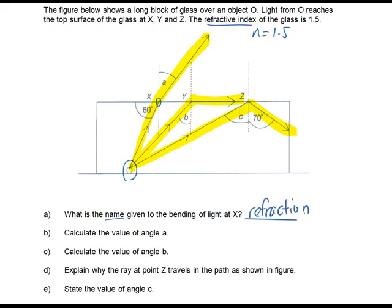They are basically asking for the process. As the light is travelling from a denser medium glass to the less dense medium air, the speed of light increases. Therefore, it bends away from the normal.